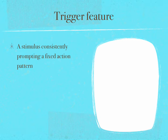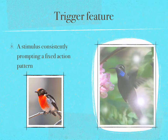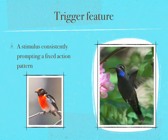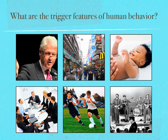A trigger feature is a stimulus consistently prompting a fixed action pattern. A male Robin acting as if a rival has entered its territory will vigorously attack nothing more than a clump of Robin red-breast feathers, and will virtually ignore a perfect stuffed replica of a male Robin without red breast feathers. The same behavior is found with the blue-throat hummingbird, where the trigger feature is blue feathers. Specific actions will consistently follow a trigger feature.